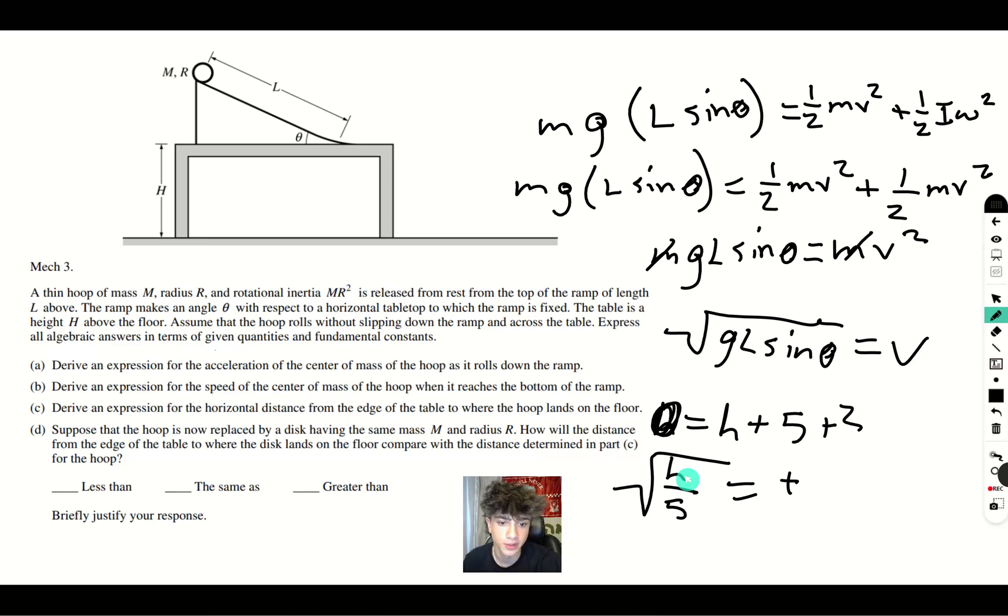Suppose that the hoop is now replaced with a disk having the same mass M and radius R. How will the distance from the edge of the table compare from the distance determined in part C?